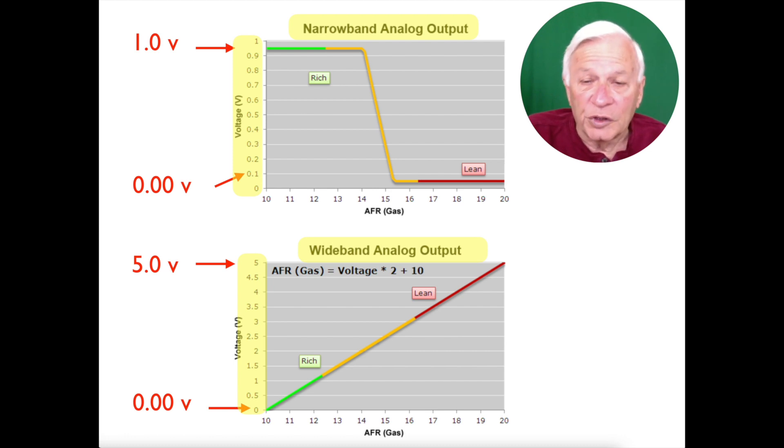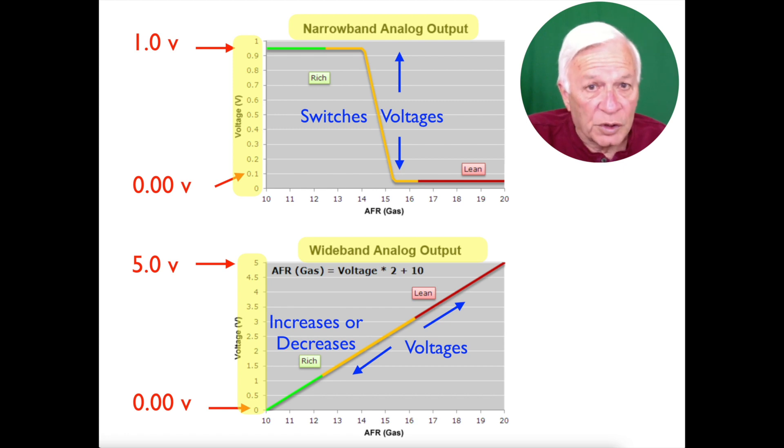Notice that they both report rich and lean conditions. One switches back and forth between rich and lean and switches voltage high or low. Now the other does not switch but instead it increases or decreases the reported voltage.